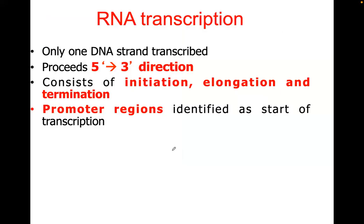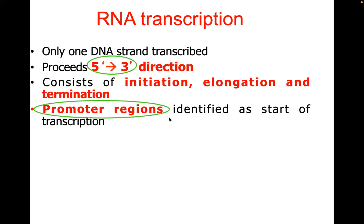Regarding transcription of RNA: only one DNA strand is transcribed; it proceeds in one direction — 5 prime to 3 prime. There are three steps: initiation, elongation, and termination. The area where transcription starts is known as the promoter region.